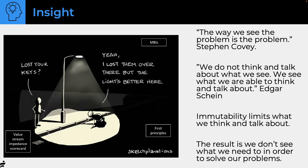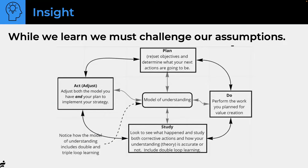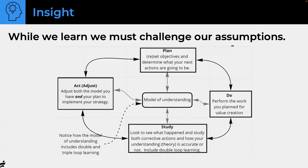One old way — decades old — is Plan-Do-Study-Act, the Deming cycle. How I think of it: there's planning where you set your objectives and determine your next actions, you refer to your model of understanding, you do the work, you study it to see what happened, and then you act — adjusting your model and your plans. Everything you do in this cycle is managing the work and questioning your model of understanding.